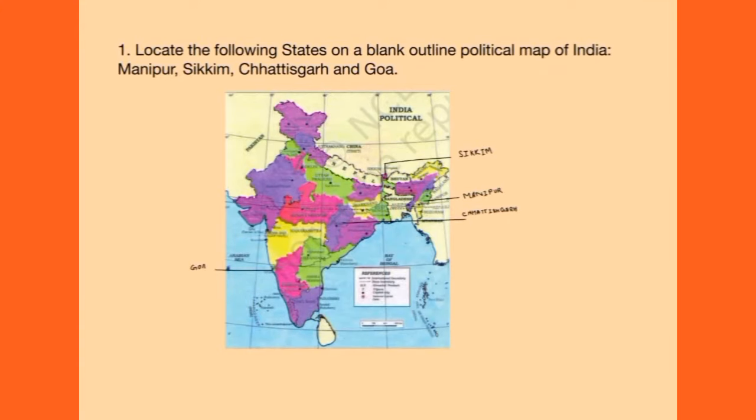First question: locate the following states on a blank outline political map of India — Manipur, Sikkim, Chhattisgarh and Goa. We will show these states on the outline political map of India.